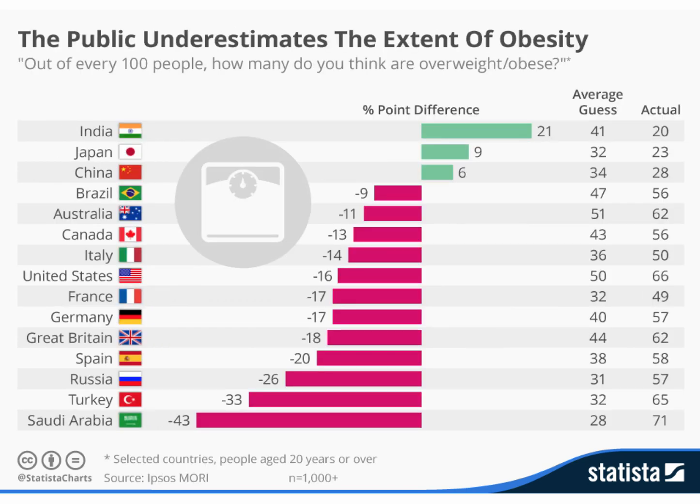This chart from Ipsos Mori shows the difference between people's perception of the extent of obesity and the actual data, measured using standardized body mass index for people aged over 20. In most countries — from Brazil ranging down to Saudi Arabia — the average guess of the percentage of the population that is obese is significantly below the actuality.